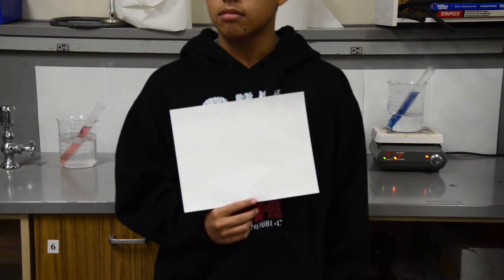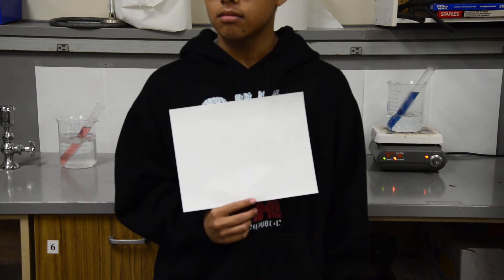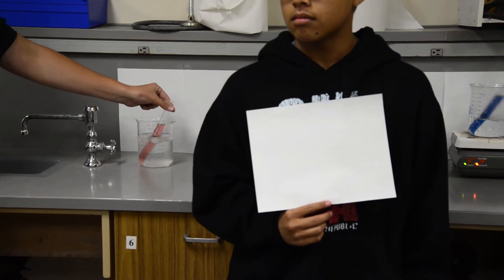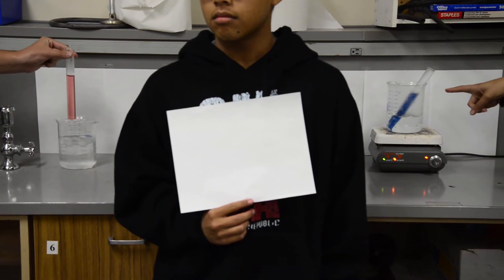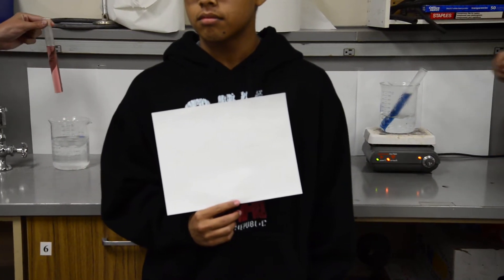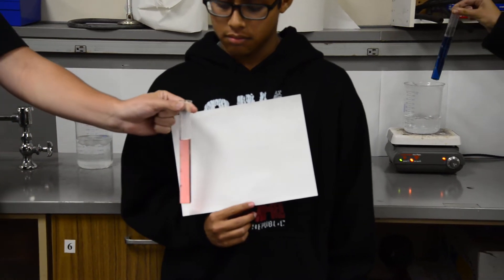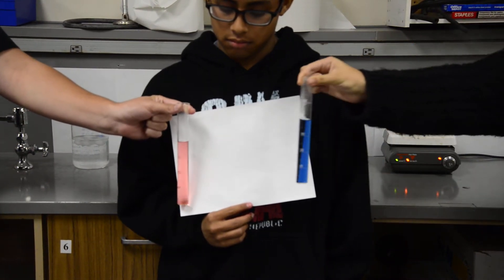We're going to pick up the tubes from the ice water bath on your left and from the hot water bath on the right and take a look at the colors right in front of the white paper. You can see they're pretty different.